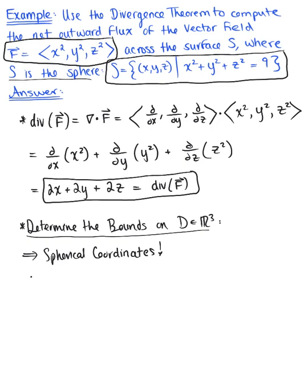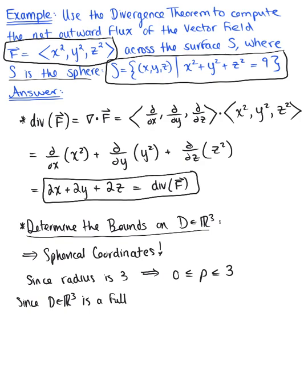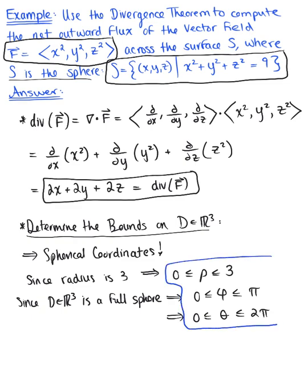We have a full sphere, so we can go right for it. Since the radius of this sphere is 3, the rho bounds are 0 ≤ rho ≤ 3. Because we have a full sphere, the bounds on phi and theta will be the standard bounds: phi is from 0 to pi, and theta is from 0 to 2pi. So there are the bounds on rho, theta, and phi.